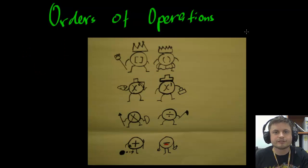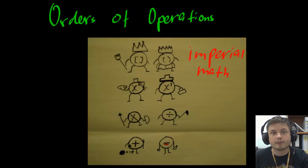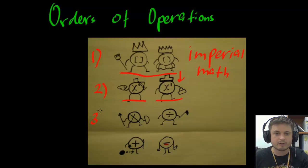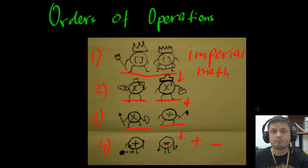Number two looks like some kind of a dynasty or imperial system, so let's call it Imperial Math. At number one we have our parentheses — these are the king and the queen. Then at number two we have our exponents — these are the nobility, the people right under the king and the queen. At number three we have our warriors and protectors — these are multiplication and division. And finally at number four, the slaves and the criminals — these are our addition and subtraction. And that's Imperial Math.